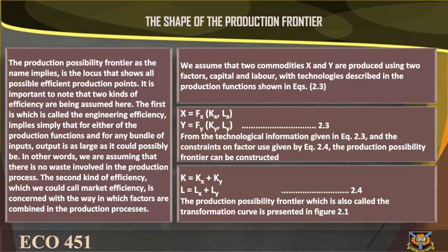The second kind of efficiency, which we could call market efficiency, is concerned with the way in which factors are combined in the production processes. We assume that two commodities X and Y are produced using two factors — capital and labor — with technologies described in the production functions shown in figure 2.3. From the technological information given in equation 2.3 and the factor-use constraints given by equation 2.4, the production possibility frontier can be constructed. This transformation curve is presented in figure 2.1. This is the end of study section 2.